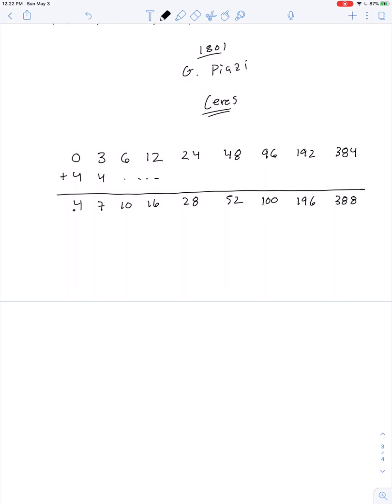And just for the heck of it, let's add 4 to every one of these. Let's see what we get: 4, 7, 10, 16, 28, 52, 100, 196, and 388. And while we're at it, let's divide every one of these numbers by 10. So 0.4, 0.7, 1.0, 1.6, 2.8, 5.2, 10.0, 19.6, and 38.8.